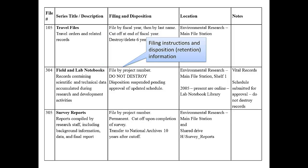The third column describes how the records are filed. This can be especially helpful when someone is trying to retrieve records, or when someone new is helping you get caught up on your filing. The file plan also lists the official approved retention time for the records. If you have records that do not yet have a schedule, or records that are frozen — that is, records that have had their schedule suspended because of an audit or a lawsuit — you would list that information on the file plan too.